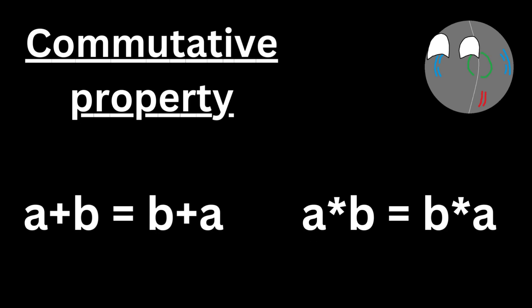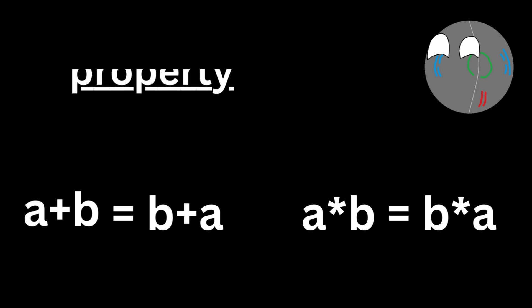The commutative property can be applied to any set of numbers — we'll take two variables for this case. So a plus b is equal to b plus a, and a times b is equal to b times a. Even if you reverse an expression involving addition or multiplication, the answer stays the same.